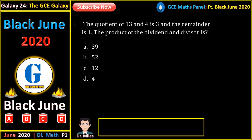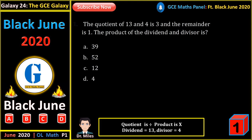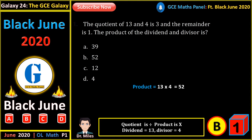The question: when 13 is divided by 4, the quotient is 3 and the remainder is 1. The product of the dividend and the divisor is? Quotient means division and product means multiplication. The dividend is 13 and the divisor is 4. So the product of the dividend and the divisor is 13 times 4, which gives us 52.